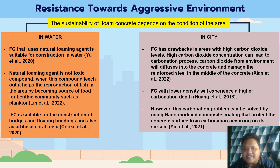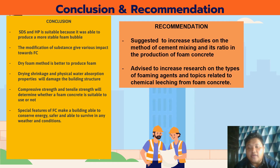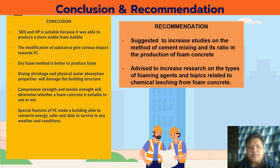Now we look at the conclusion. SDS and HP are suitable foaming agents because they produce more stable foam bubbles. Modification of substances gives various impacts on foam concrete. Dry foam method is better for producing foam. Drying shrinkage and water absorption properties will affect the produced structure. Compressive strength and tensile strength will determine whether foam concrete is suitable to use. The special features of foam concrete make it able to conserve energy, be safer, and survive in any weather and condition.